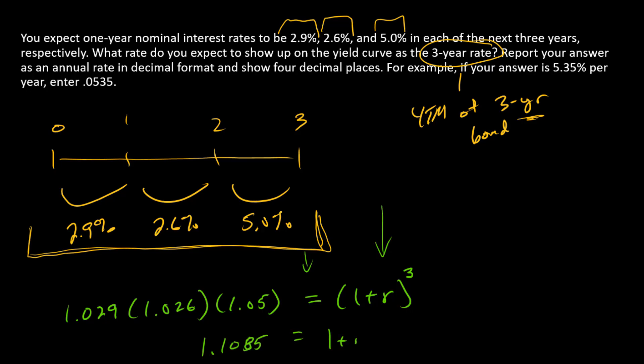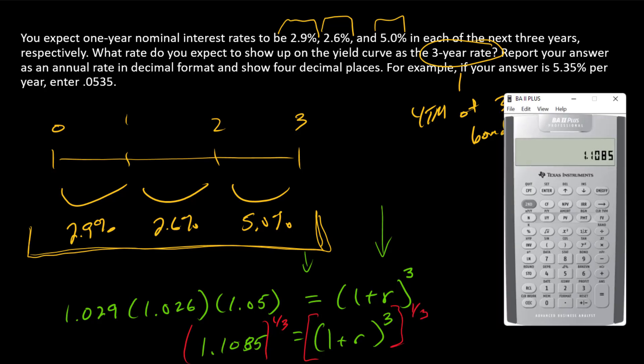So 1.1085 equals (1 + r)³. How am I going to find r? I'll just raise both sides to the one-third power, and that'll get rid of the exponent.